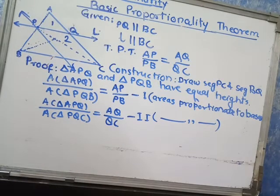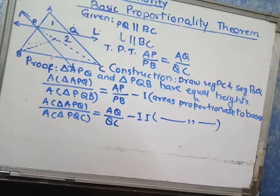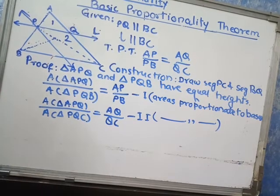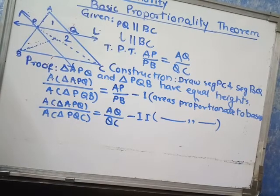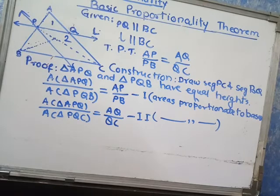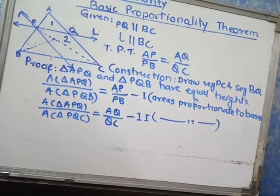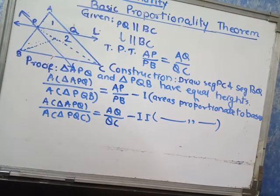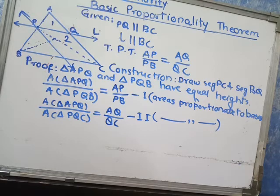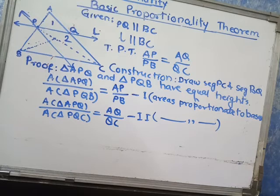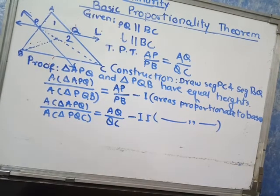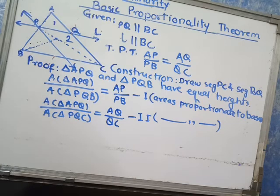Observe equation number 1 and 2 and read the statement of theorem. In equation number 1 and 2 we use our previous knowledge that if the two triangles have same height then ratio of their areas is equal to the ratio of their corresponding bases. Equation number 1 and 2 is because of condition 1 or property 1 of page number 2.